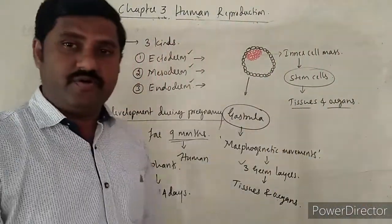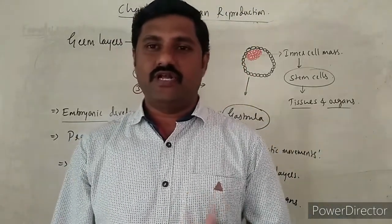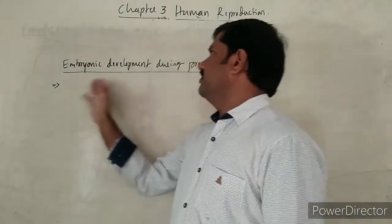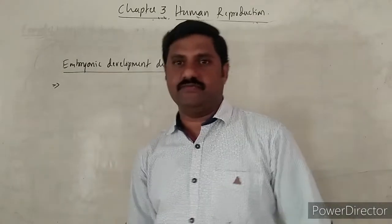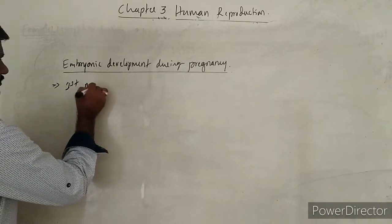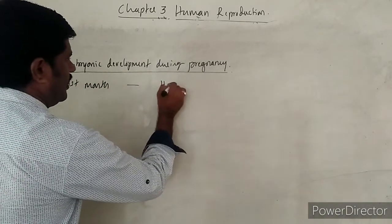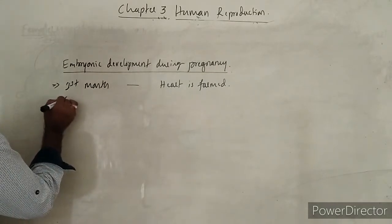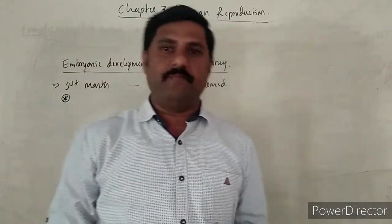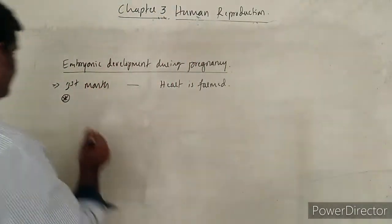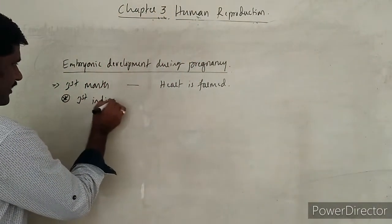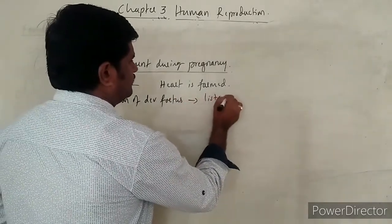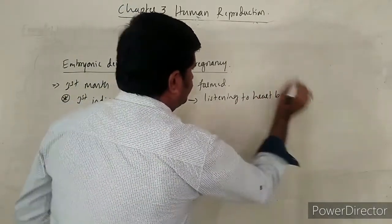During the course of human pregnancy, what organs are developed in which month and week — we are going to learn one by one. By the end of the first month, the heart is formed. The first indication of fetal development is listening to the heartbeat.